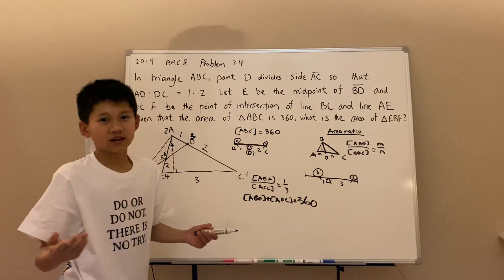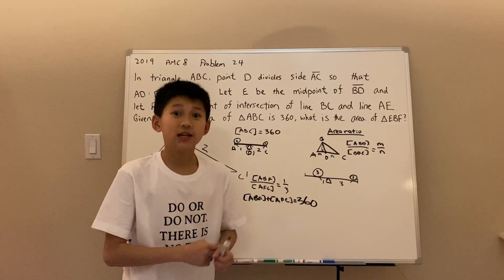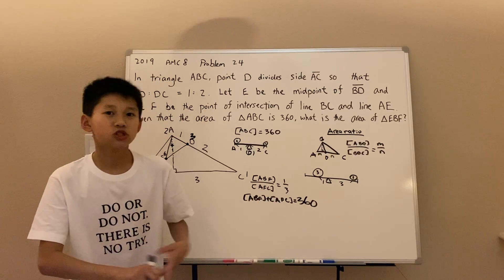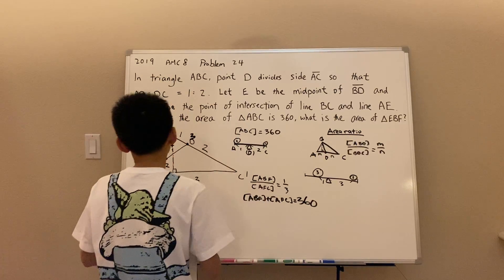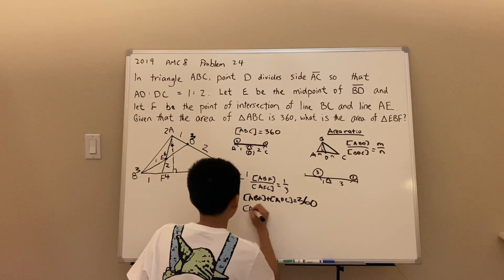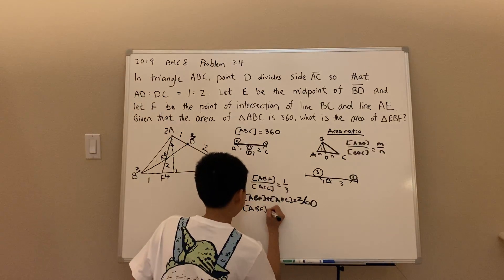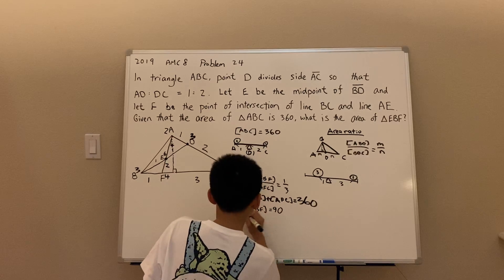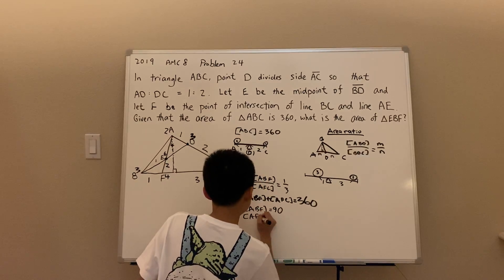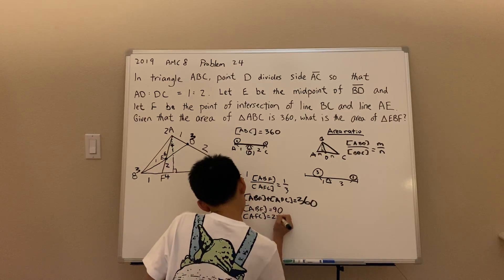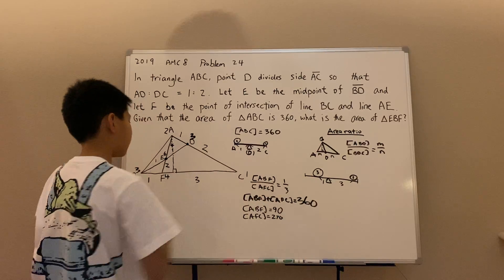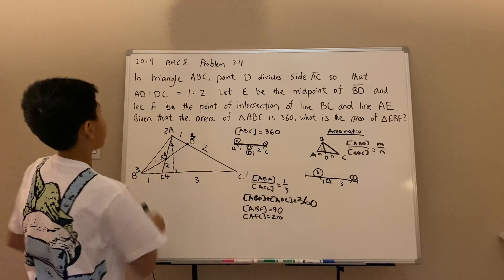Well, guess what? We have two equations and two unknowns. So we can solve. Solving, we can get that the area of ABF is 90. And the area of AFC is 270. But we care more about the area of ABF because that's where our answer is in.